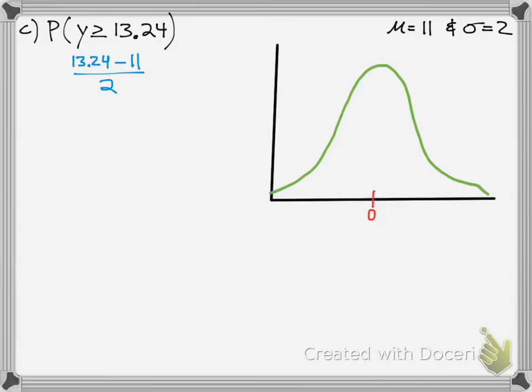And we end up getting our z-value, because that's now converted into z using that formula in the z-score. So, where z is greater than or equal to 1.12. And that's our probability of what we're looking for.